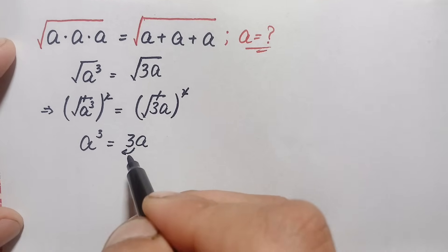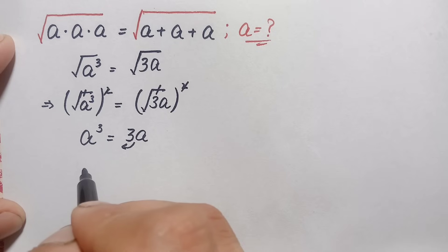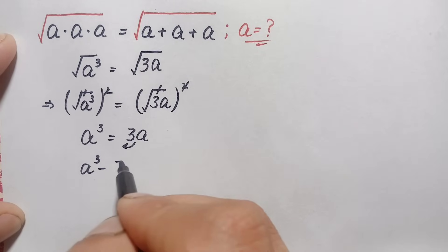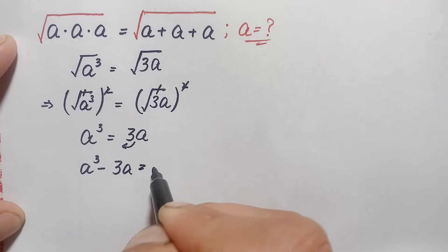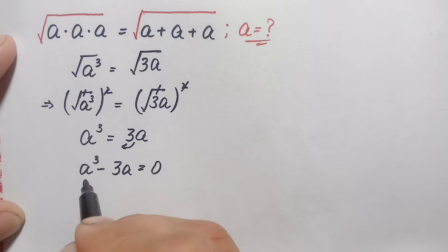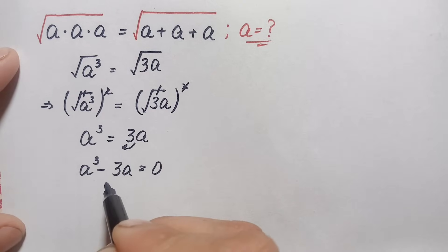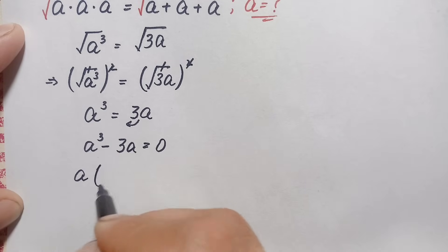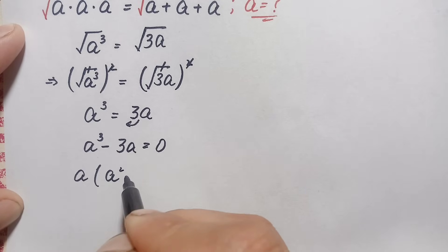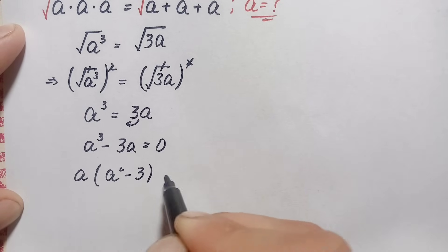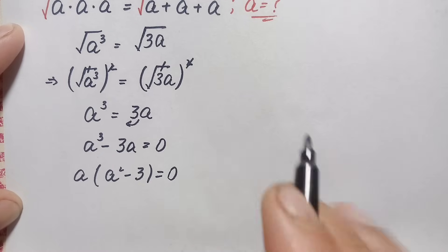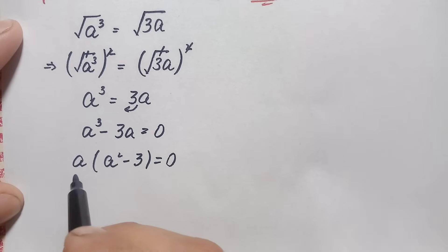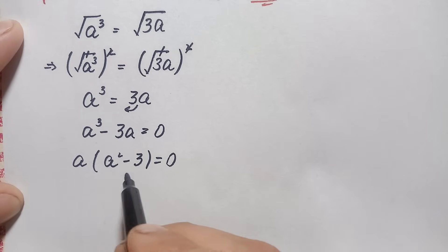We move 3a to the left hand side, so it becomes negative 3a. The equation becomes a cube minus 3a is equal to zero. There is a common factor of a in both terms on the left hand side, so we take out a common, giving us a times (a squared minus 3) is equal to zero.